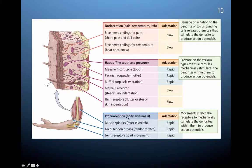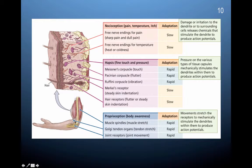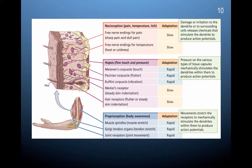Proprioception overall is body awareness. These are all rapid responses — movement stretches receptors to mechanically stimulate the dendrites within them to produce action potentials. You have receptors in your muscles, tendons, and joints that when you move, the stretching activates action potentials and sends information to your brain. Proprioception is highly important for balance and any sort of physical activity. It allows you to know where all of your body is in space without looking at it — your posture, where your arms and legs are — because receptors throughout your muscles, joints, and tendons send positional information to the brain.